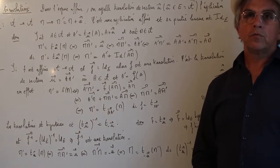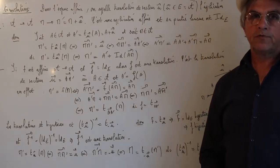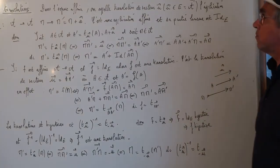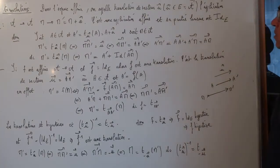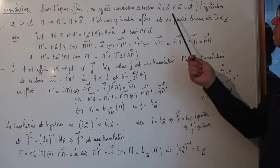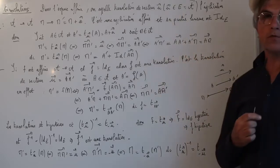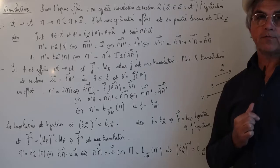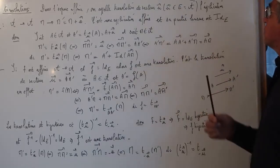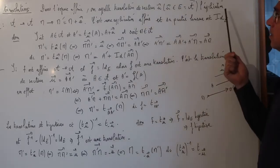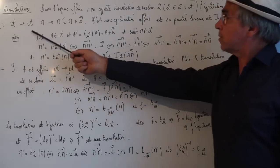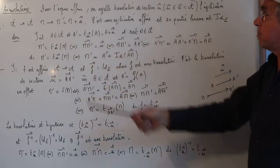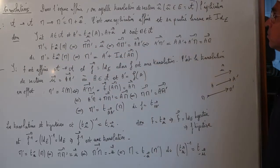Nous étudions maintenant les applications affines les plus simples, c'est la translation. Dans un espace affine, on appelle translation de vecteur U — U étant un vecteur appartenant à la direction E de l'espace affine — l'application de A vers A qui au point M associe le point M' égal à M plus vecteur U.